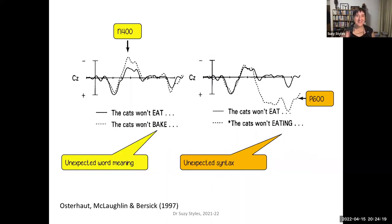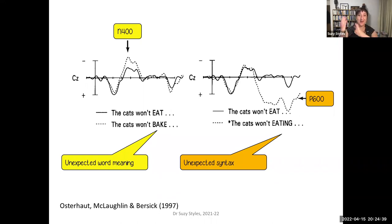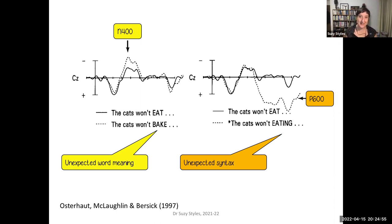If we see a different kind of violation: comparing 'the cats won't eat' versus 'the cats won't bake' gives an unexpected word in context — that's an N400. But comparing 'the cats won't eat' versus 'the cats won't eating,' where the meaning of the word is fine but the grammar doesn't align with what we expect — that produces a different kind of effect. It's not negative and not at 400 milliseconds. This is a P600 — a positive effect at 600 milliseconds.